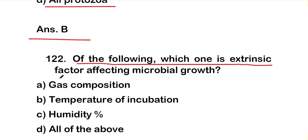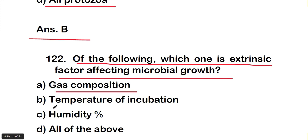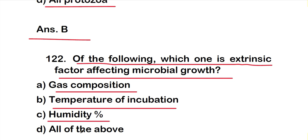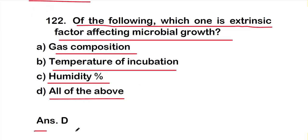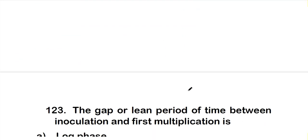Question number 122: Which of the following is an extrinsic factor affecting microbial growth? Option A: gas composition, Option B: temperature of incubation, Option C: humidity, or Option D: all of the above. The right answer is Option D — all of the above. All of these are extrinsic factors affecting the growth of microorganisms.